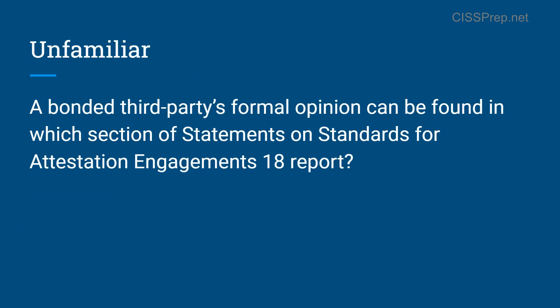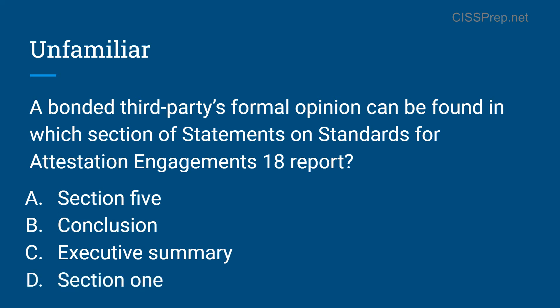Let's look at an example of a question that uses unfamiliar terminology. Take a minute to pause the video and see if you can come up with the answer. The unfamiliar term should have been 'bonded third party.' The term 'bonded' just means that they're bound to a contract of some type. The way to approach these questions is to try and ignore the unfamiliar word and solve the problem without it, because these terms can really trip you up during the exam. If you ignore the 'bonded third party' aspect and look at the rest of the question, it becomes a bit simpler — it's asking where the formal opinion can be found in the SSAE 18 audit report. If you've studied domain 6 well enough, you would choose section 1.